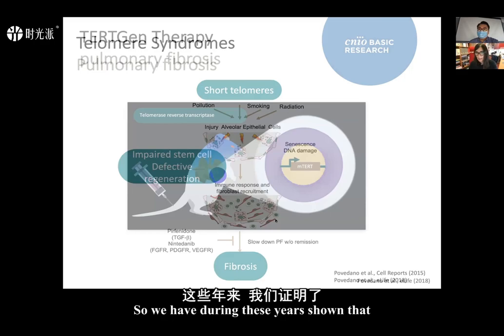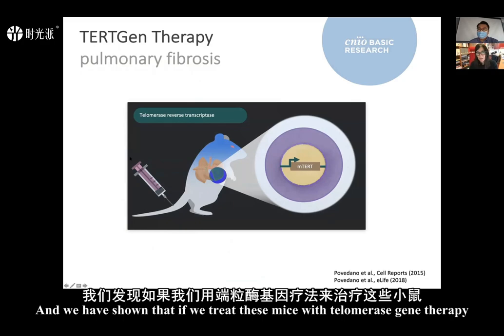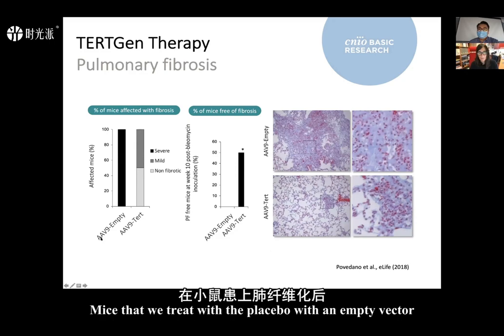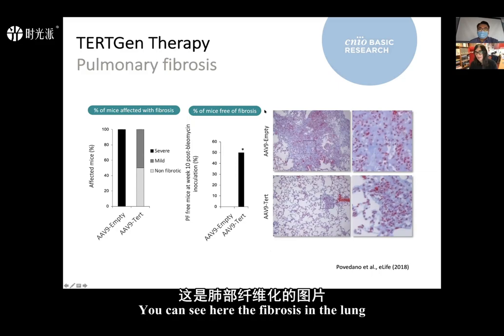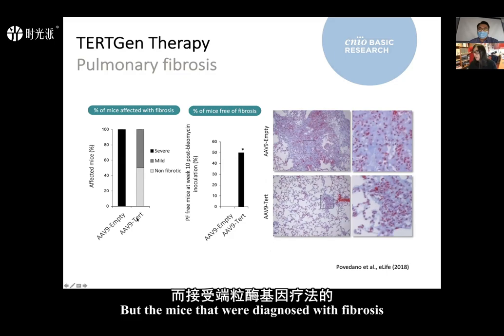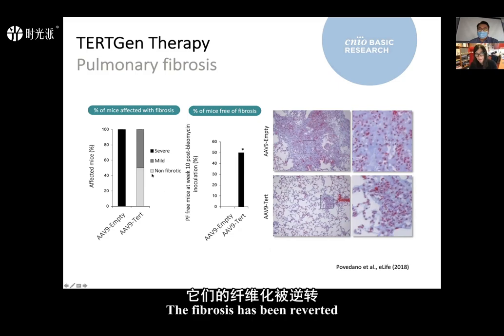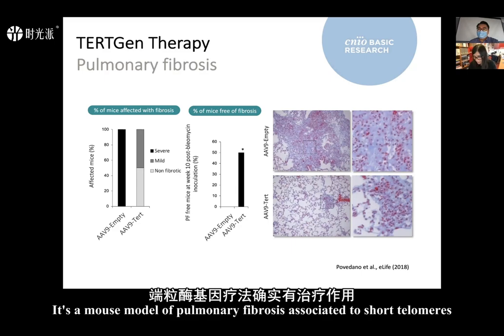We have generated mice that develop pulmonary fibrosis due to short telomeres and shown that treating them with telomerase gene therapy can cure it. Mice treated with a placebo vector after fibrosis diagnosis all progressed to severe pulmonary fibrosis. But mice diagnosed with fibrosis and treated with telomerase gene therapy — half had no fibrosis at all (the fibrosis was completely reverted) and the other half had only small patches of fibrosis. This demonstrates a clear therapeutic effect in a mouse model of pulmonary fibrosis associated with short telomeres.